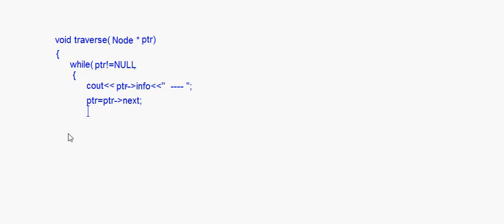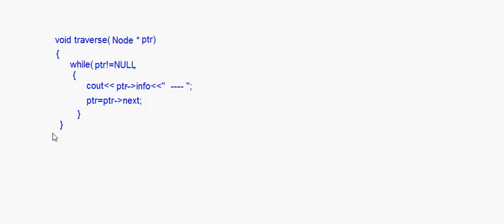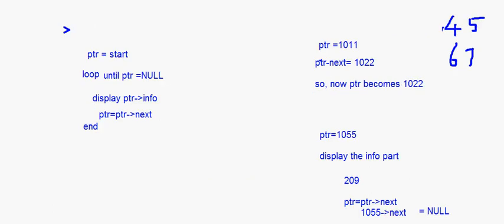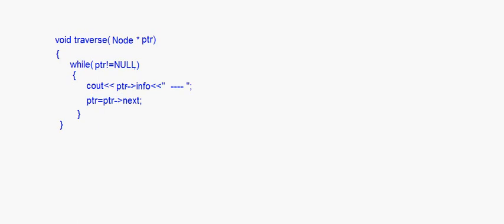After advancing ptr to the next node, we close the while loop and close the traverse function. Control passes from where we called traverse. There should be a bracket after the while condition. This is a simple traversal — quite easy. Since we've already looked at insertion and deletion concepts, traversal is much simpler: just four lines of code. With that, I come to the end of this session on traversal in a linked list. Bye!